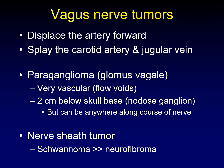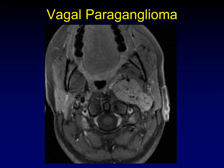This is what a vagal paraganglioma looks like. The internal carotid artery has been splayed away from the internal jugular vein by this tumor, which arose behind and between them. Large flow voids indicate a hugely vascular tumor, characteristic of a vagal paraganglioma. We are right below the skull base at C1, the most common location for this lesion.